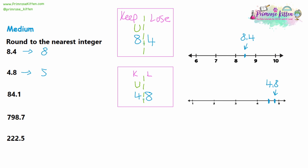With that in mind, let's take a look at question 4. We have 84.1. Let's write down the place values: units and tens. We're rounding to the nearest integer, so we rule off after the units. We keep everything on the left and lose everything on the right — so we're keeping two numbers. Before writing 84 down, check the first number we're losing to see if it's 5 or higher. It's a 1, so we're rounding down. So 84.1 rounds down to 84.